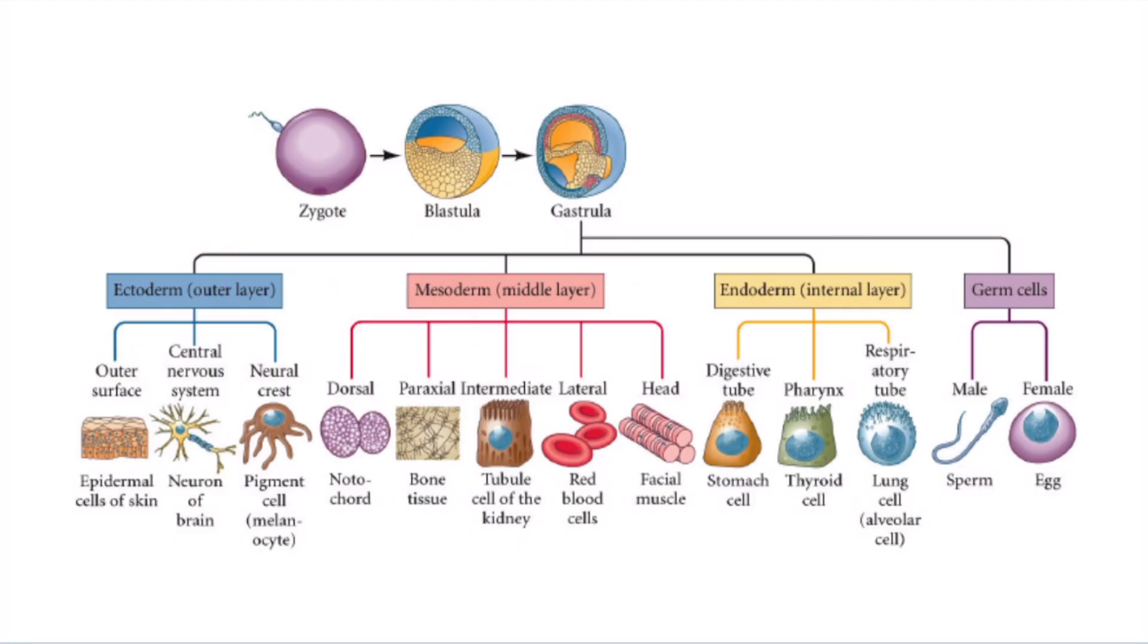When a zygote starts dividing and undergoes morphogenesis, the movement of cells, there are various layers formed that have a fate or derivative set of cells or tissues that it will become, due to the nature of where it is found in the embryo. We use the universal colors blue, red, and yellow to represent the three germ layers.